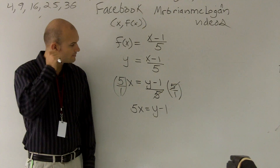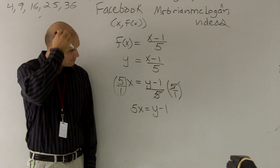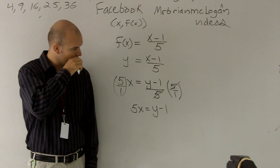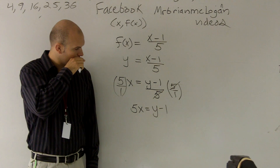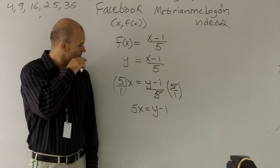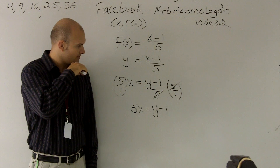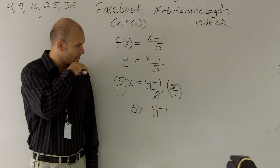Student question: If you're multiplying by the 5, why don't you get rid of the y? Where am I getting rid of the y? — Like the y minus 1. — Well, I didn't get rid of it.